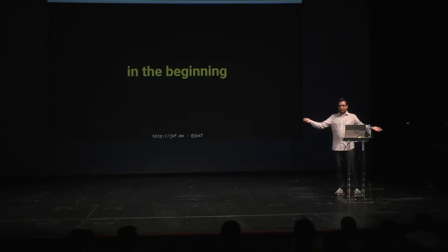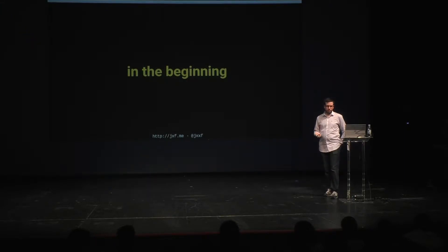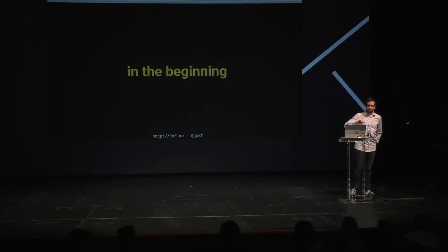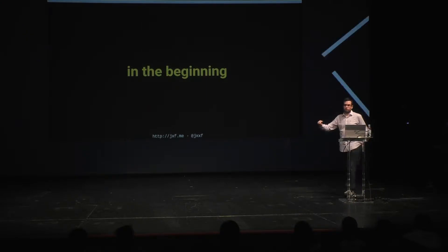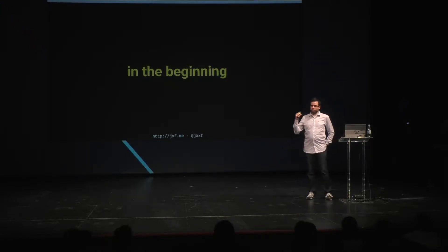What are blockchains and why might they be useful to some applications? Way back on Halloween 2008, someone — we still don't know who — someone who used the name Satoshi Nakamoto posted to a very obscure cryptography-related email list a white paper about a new idea called Bitcoin. At the time, it didn't really make much of a splash. It was kind of overlooked.